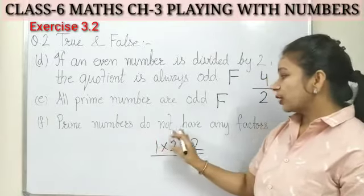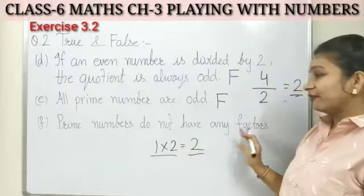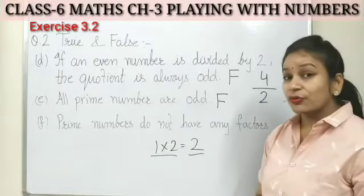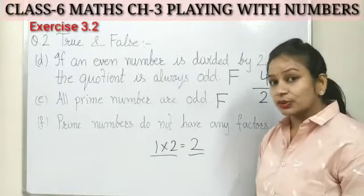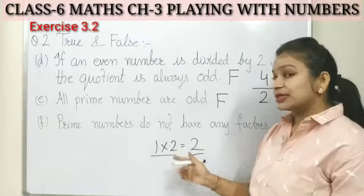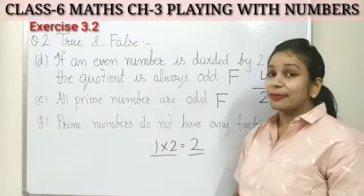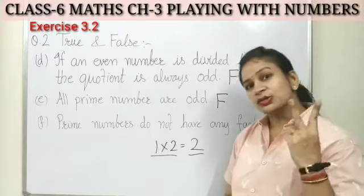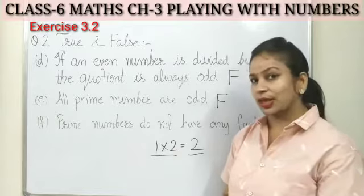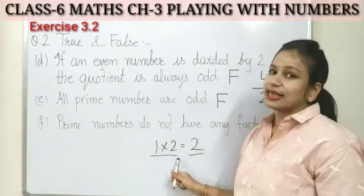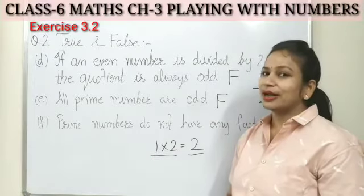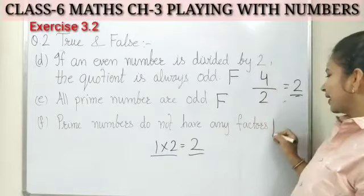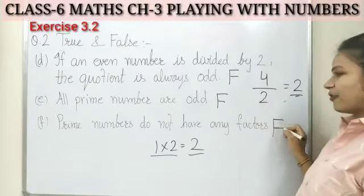Statement F: prime numbers do not have any factors. This is also wrong. As just explained, prime numbers always have two factors — one is the number one, and the second is the number itself. So this statement is also false.